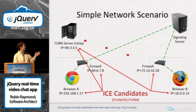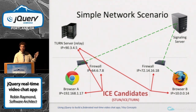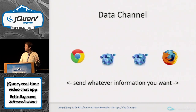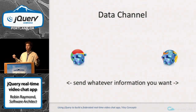In some scenarios you will actually need to relay the data — you won't be able to send the data directly between you and the other firewall, so you'll actually have to relay the data through an intermediary server on the internet. And then once you've got the established media connection, you can send arbitrary data directly between one peer to the other.